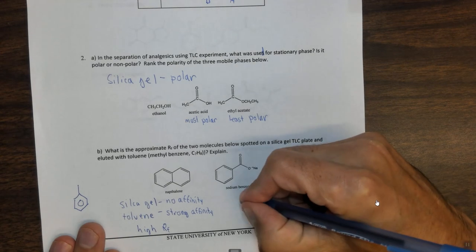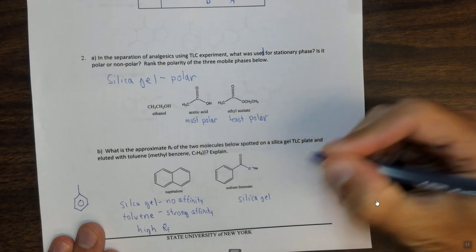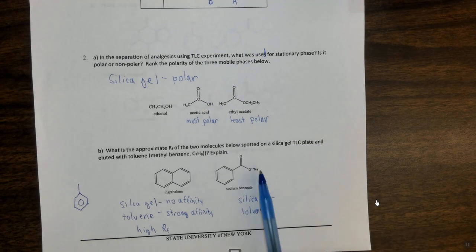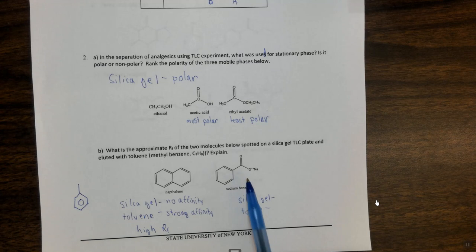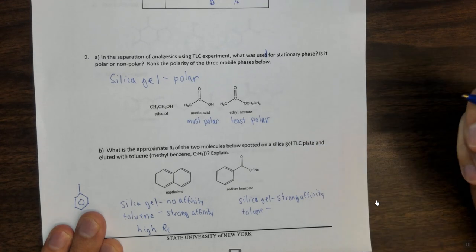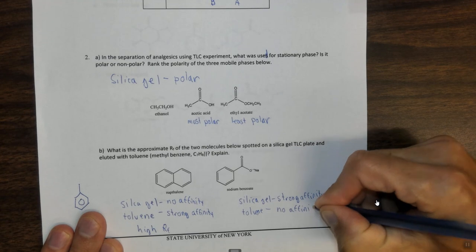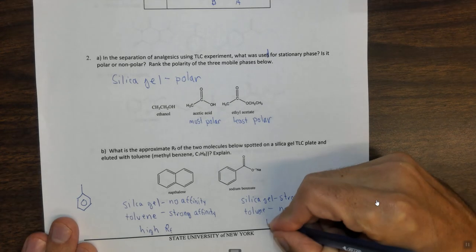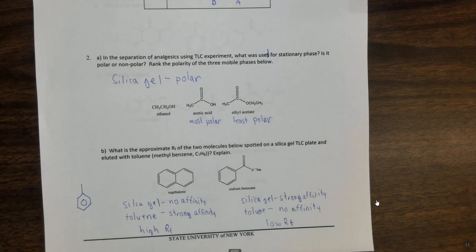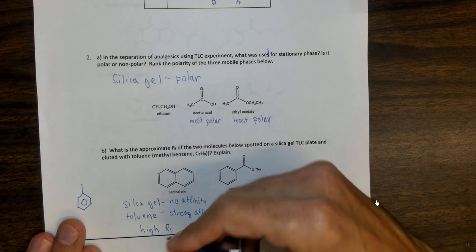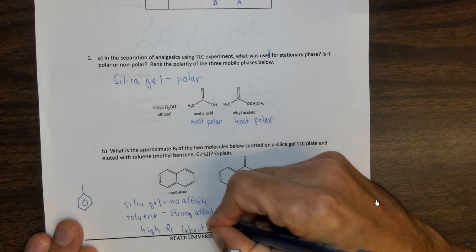What about sodium benzoate? Sodium benzoate is an ionic compound. Ionic compounds we don't usually describe as polar or non-polar, we just call it ionic. But when we have an ionic compound, it's going to have a strong affinity for the silica gel, for the polar silica gel. And it's going to have no affinity for toluene. So therefore in this case, the RF is going to be very low. Now if you want to give an exact number for high RF, you could say around one, and for this one you could say around zero. Because the RF is a ratio of how far the molecule travels versus how far the spot travels, so it has to be between zero and one.